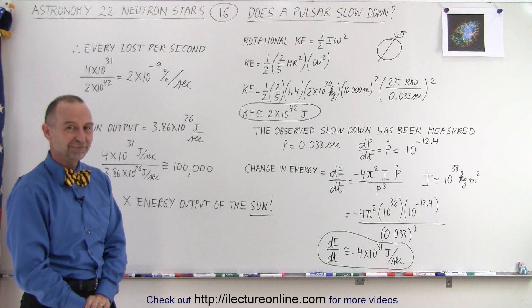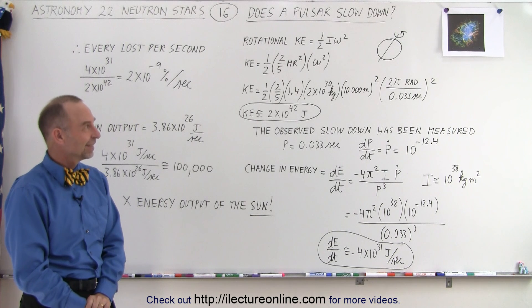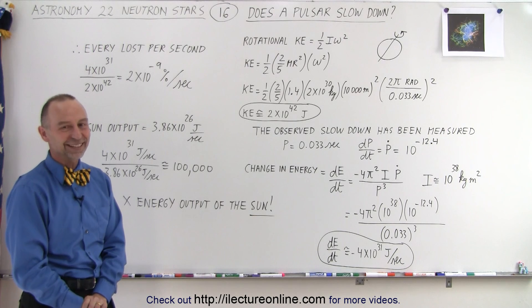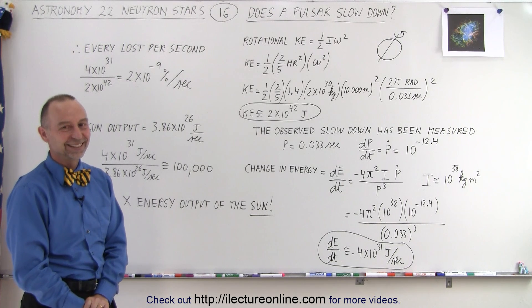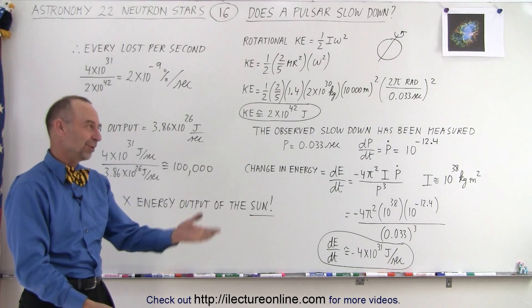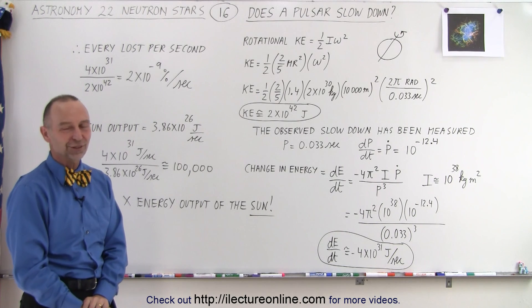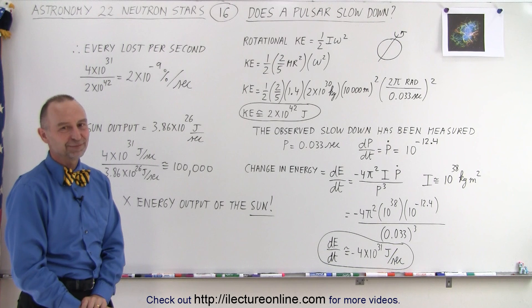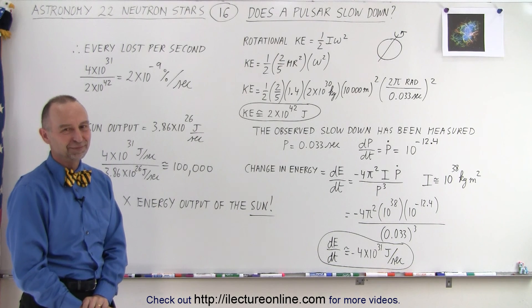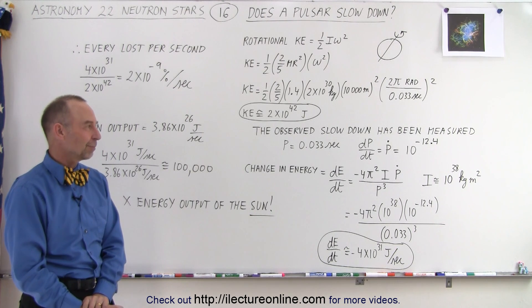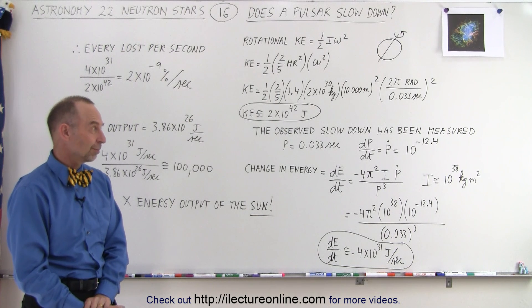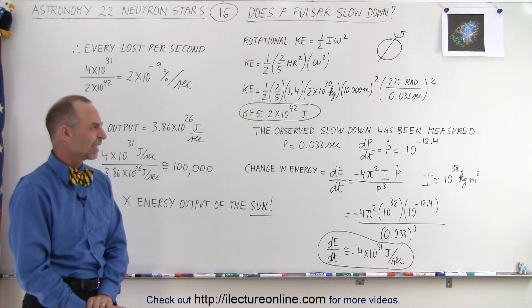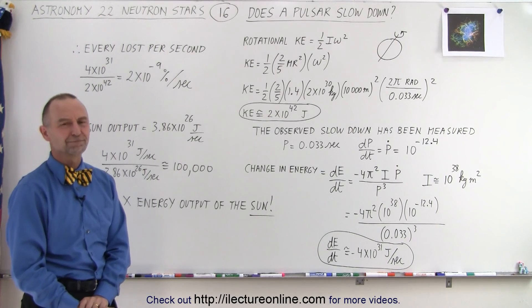I've never seen the power to the negative 12.4. It's an interesting way of putting it. Is that an astronomy thing? They just put it in that format. It's just a ratio. It's just how fast per second the period is changing. So that would be in, the period would be in terms of seconds per second. Kind of a strange way of putting it.